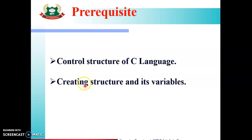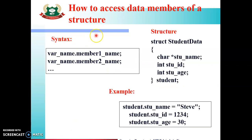Prerequisite to this topic is that you should know the control structure of C language as well as all the data types of C language, and you should know how to create a structure and how to define variables of a structure. In the last lecture, we saw how to create a structure and how to create variables of a structure. Today we will see how to access data members of a structure.